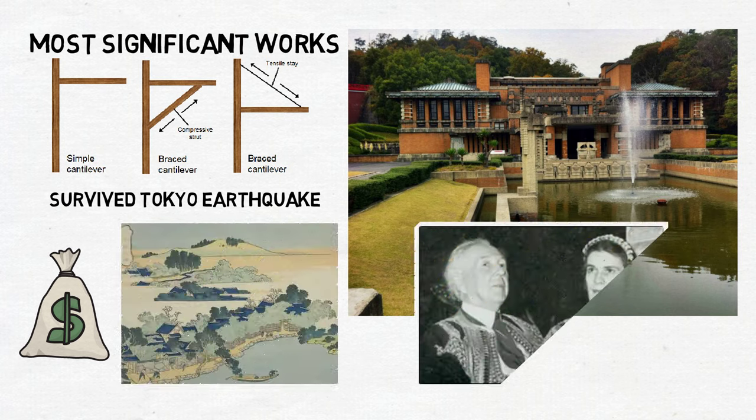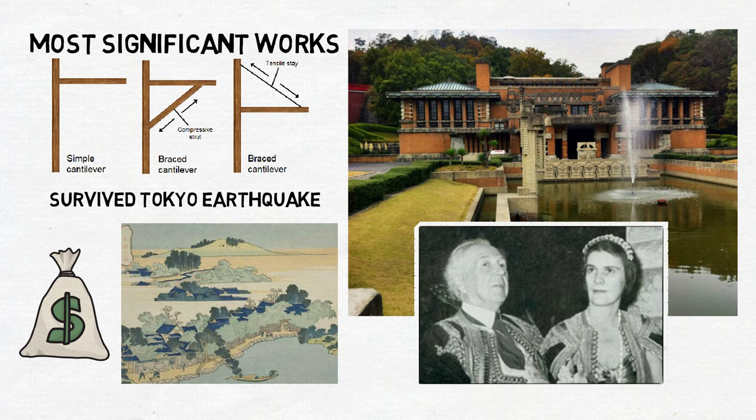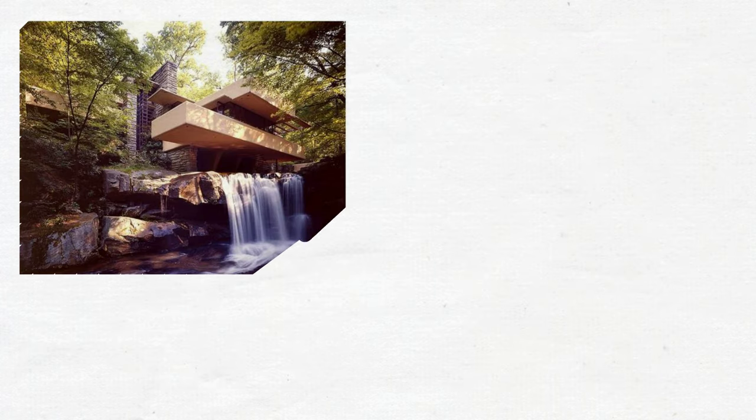Two years later, he remarried to Olgivanna Hinzenberg. The 1929 stock market crash all but ended architectural construction in the USA, so he began teaching in Chicago, New York, and Princeton. In the mid-1930s, as the national US economy recovered, he re-emerged as a leading architect, constructing his most famous piece, Fallingwater, in 1936.